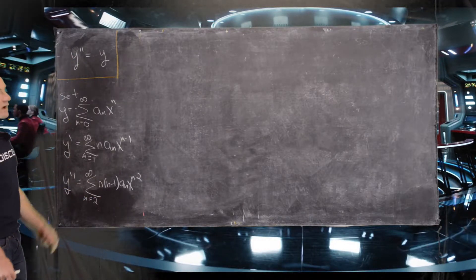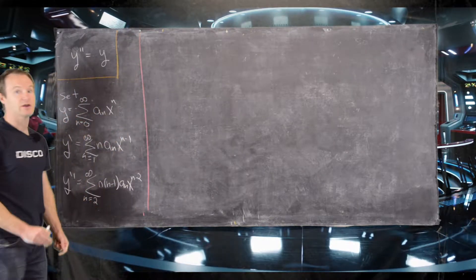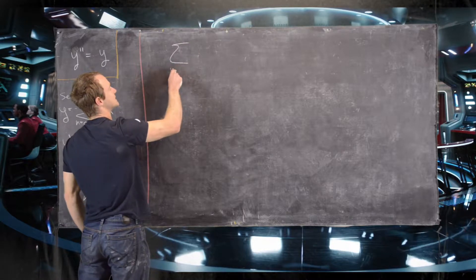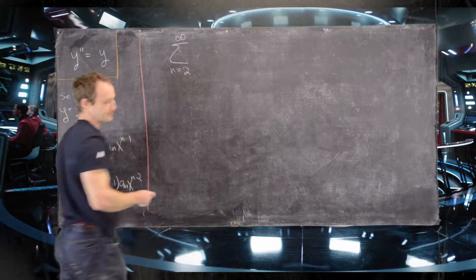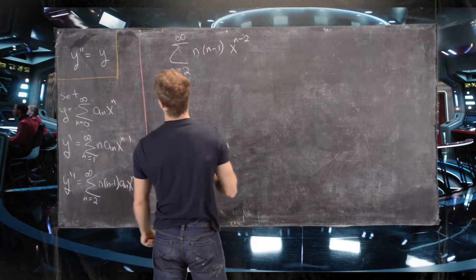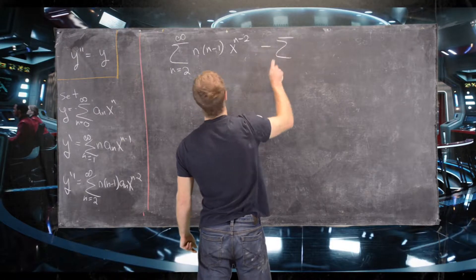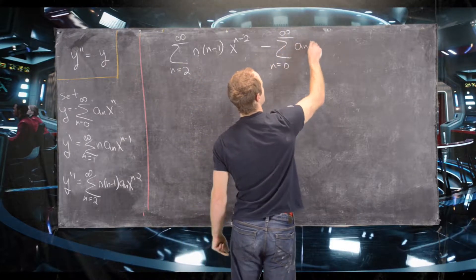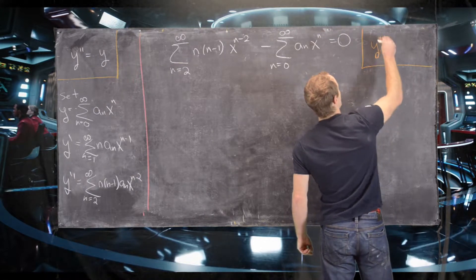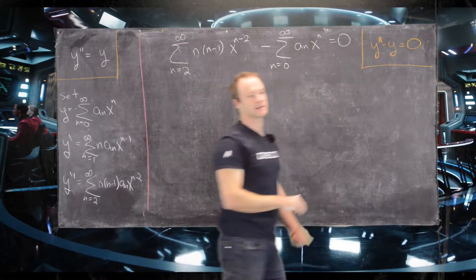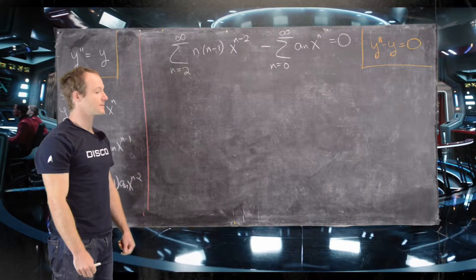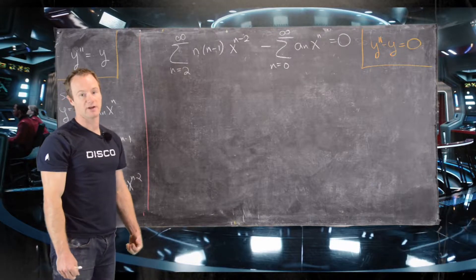Now we have all the parts of our differential equation — y'' and y — so we can set up an equation involving series to solve for the coefficients. Our equation is: the sum from n = 2 to infinity of n(n−1)·aₙ·xⁿ⁻² minus the sum from n = 0 to infinity of aₙ·xⁿ equals 0. This is the equation y'' − y = 0, which makes our calculations a little simpler and more universal for more complicated series solutions.